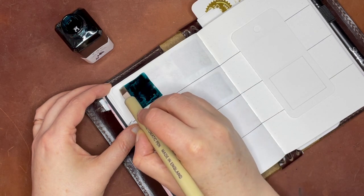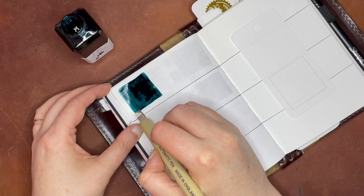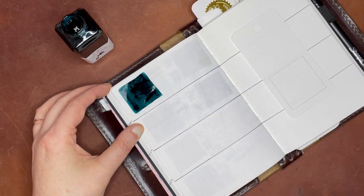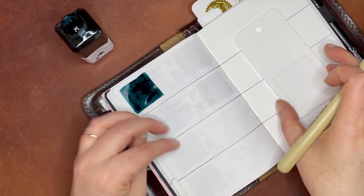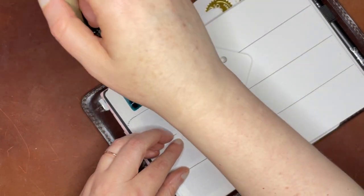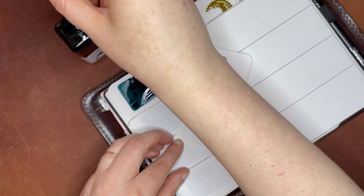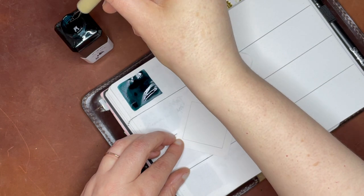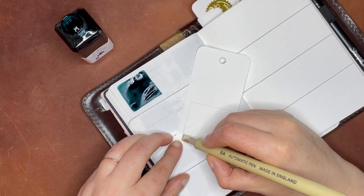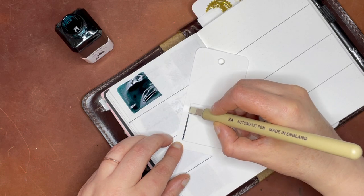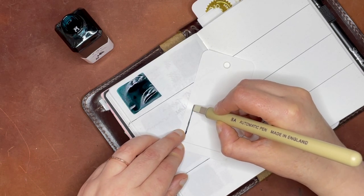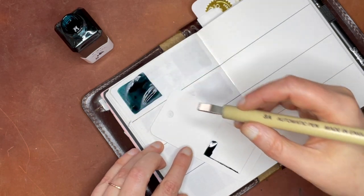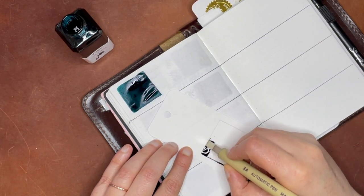So I think why everybody really likes these inks is they have so many really unique colors. And I'm actually not going to rinse that off. I'm going to go ahead and do the square here. And they have a lot of interesting shading colors, which I think a lot of people like. This one has a little bit of sheen to it and is really, really pretty. It's a really nice dark teal, which I tend to love dark teals.